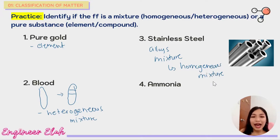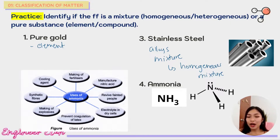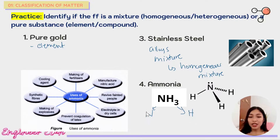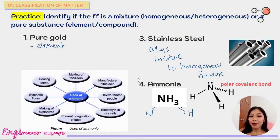Number four: ammonia. This is a compound because it contains two types of elements — nitrogen and hydrogen. Since they are bonded chemically, this is considered a compound.